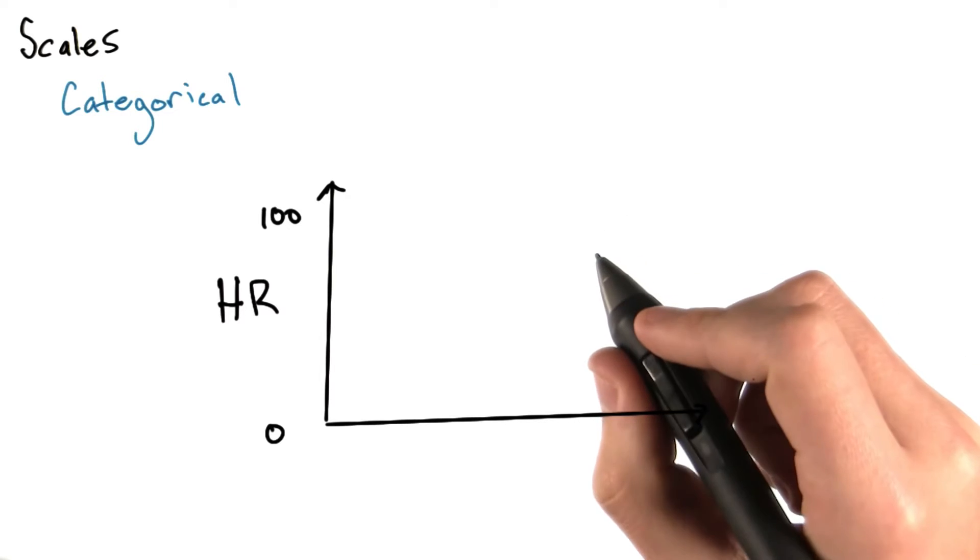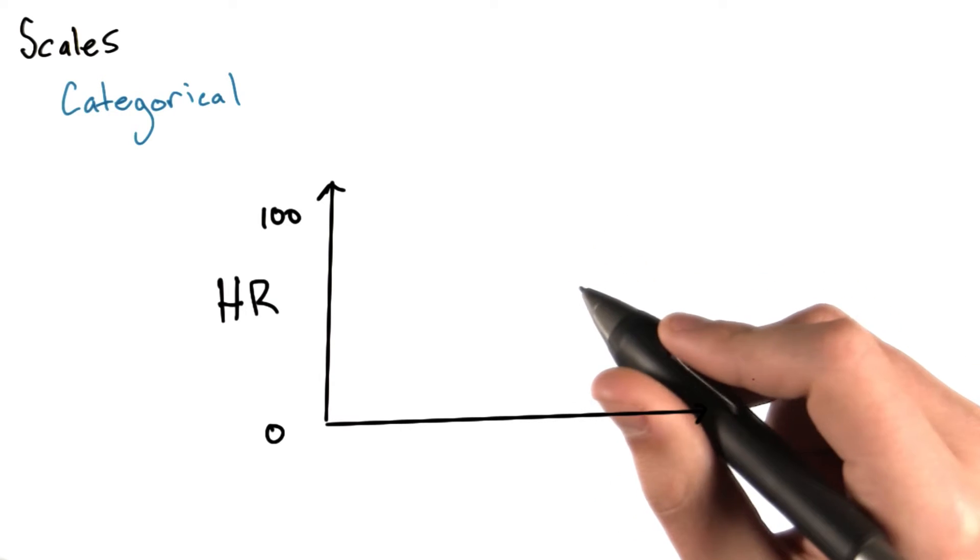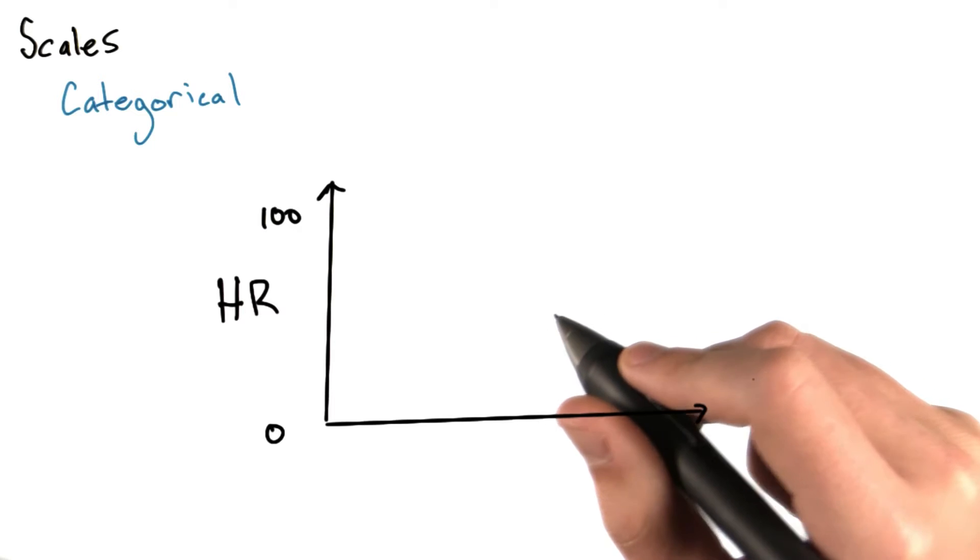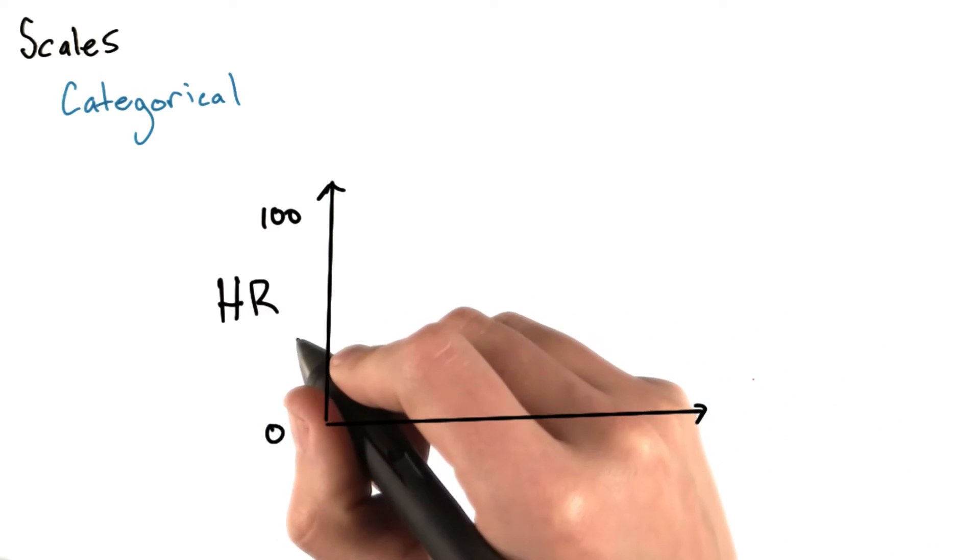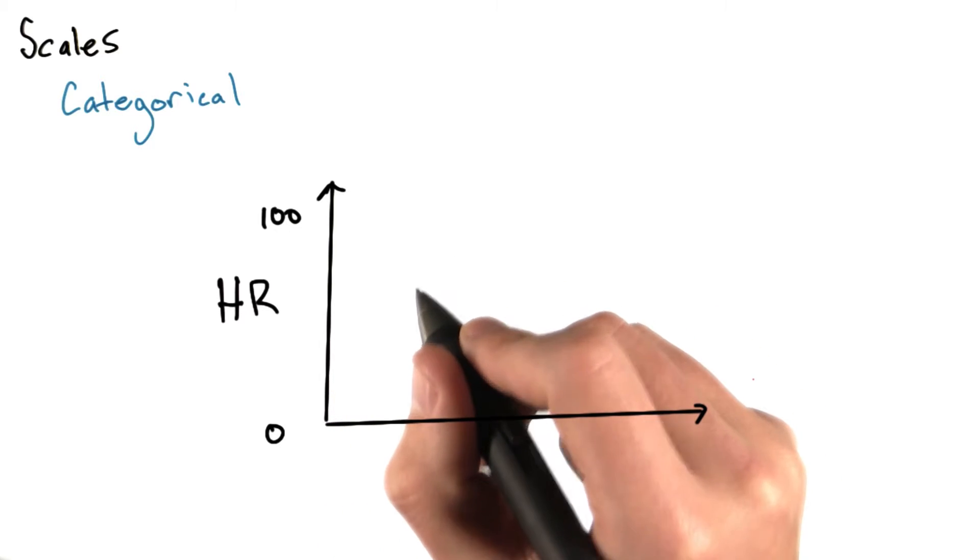Now, let's talk about scales for categorical data. A categorical scale provides visual separation for different groups, and it often works in tandem with a numerical scale, as we'll see here when we plot home runs on the y axis.